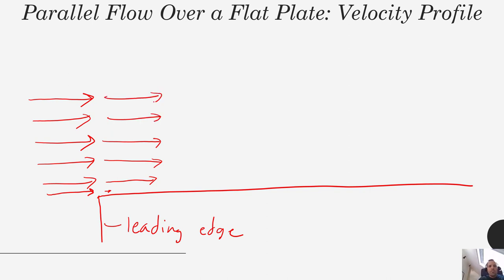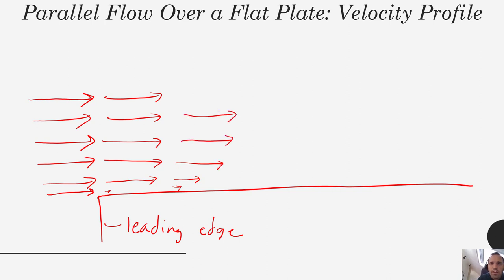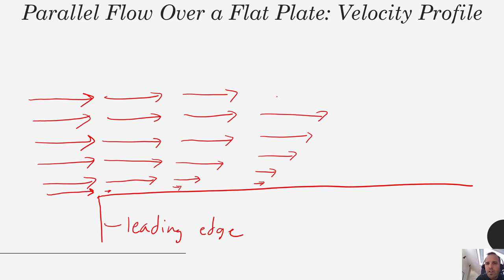As you move further and further down this flat plate, that bottom layer is going to start to have viscous forces with the next layer — it's going to start to grab onto it and slow it down. So if we looked at this velocity profile a little bit later, we might see that the bottom layer has started to grab onto the next layer and slow it down. As we keep going, those viscous forces start to propagate their way up the velocity profile, penetrating higher and higher until we start to see a much more developed profile forming.